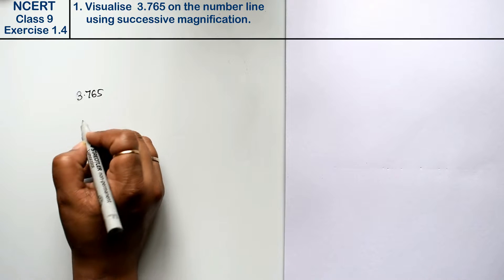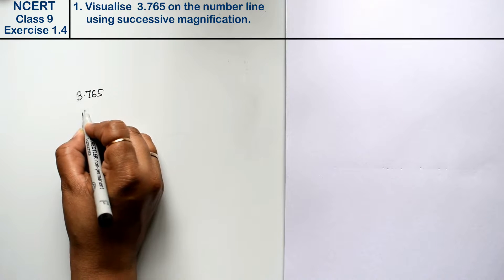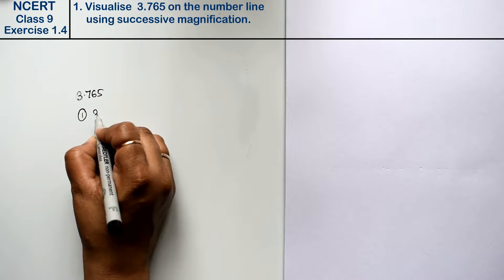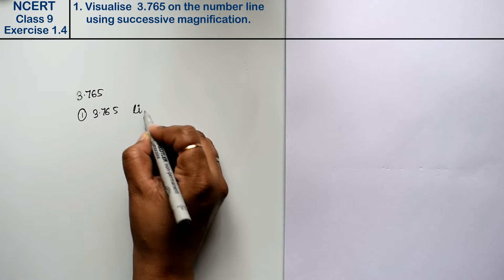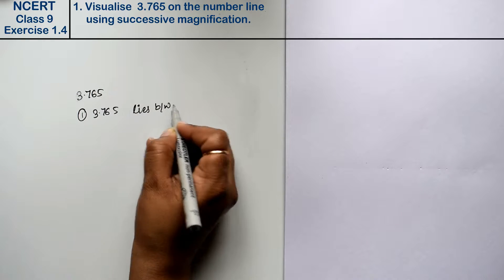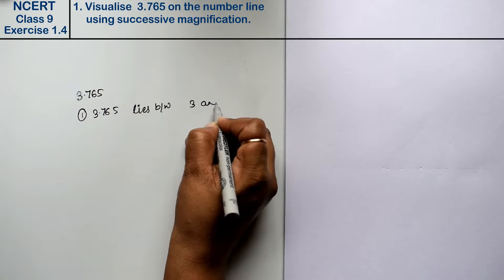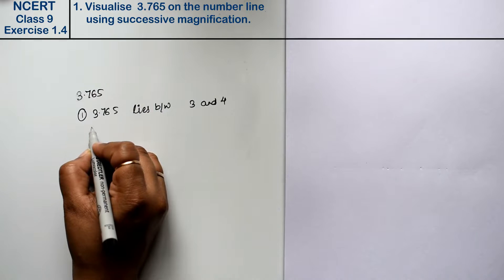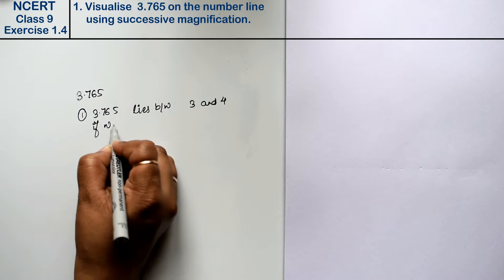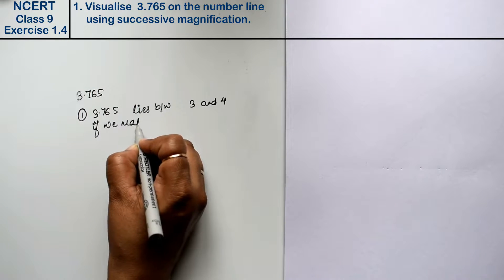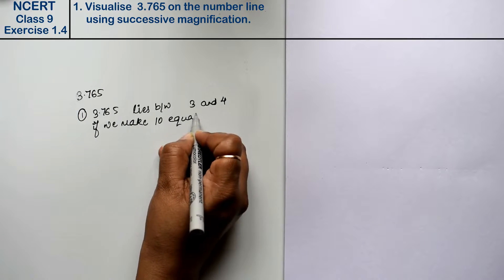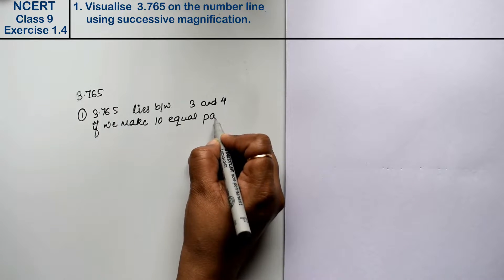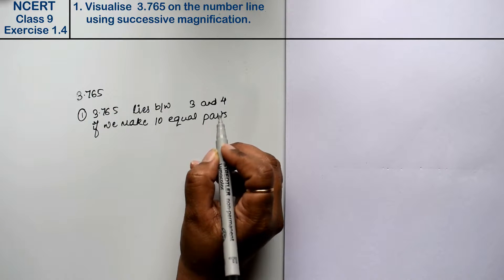This number will be placed in the first step. If 3.765 lies between 3 and 4, when will it be placed if we make 10 equal parts? Magnifying visual parts means to go to exact points.